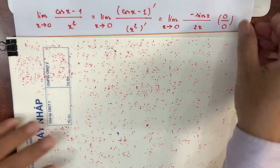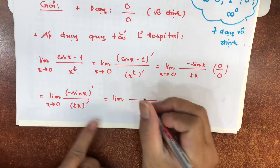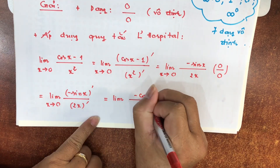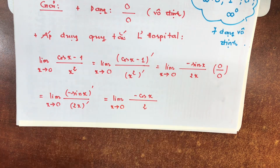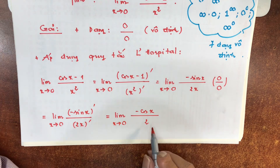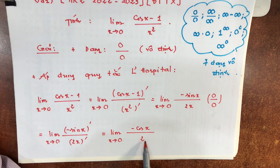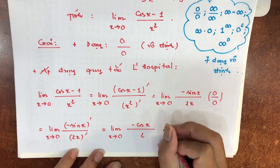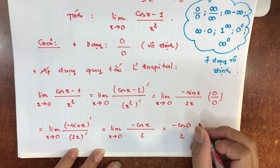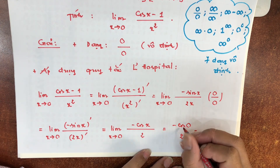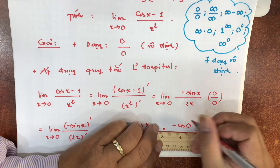Quay trở lại bài: đạo hàm của (-sin x) là -cos x, vì sin đạo hàm bằng cos. Dưới mẫu 2x đạo hàm bằng 2. Tới đây thì cái giới hạn của mình nó xác định rồi — không rơi vào 1 trong 7 dạng vô định nữa. Dưới mẫu chúng ta thấy số 2 rồi. Vậy chỉ việc thế x = 0: (-cos 0)/2 = -1/2. Đó là đáp số cuối cùng của bài toán.